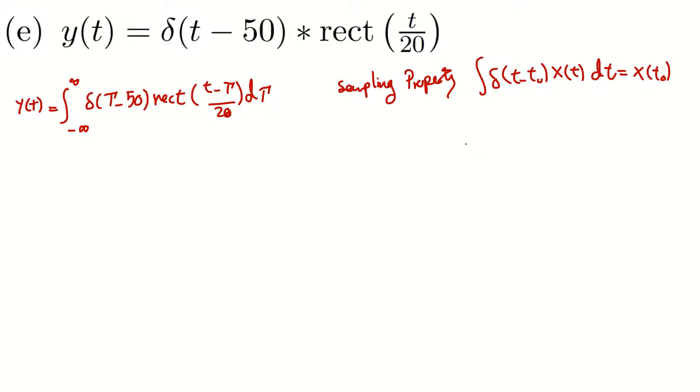We explained why is that the case in previous exam questions. So I can use the same property here. Where this τ - 50 is 0, so that t₀ is 50. So y(t) equals rectangular of (t - τ)/20.